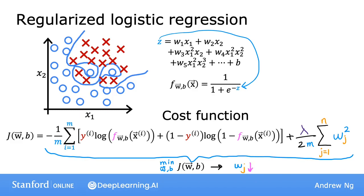And if you do this, then even though you're fitting a high-order polynomial with a lot of parameters, you still get a decision boundary that looks like this. Something that looks more reasonable for separating positive and negative examples while also generalizing, hopefully, to new examples not in the training set.